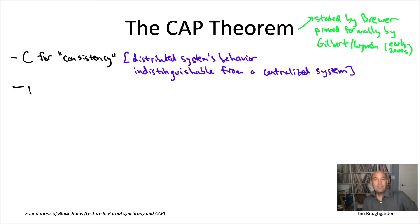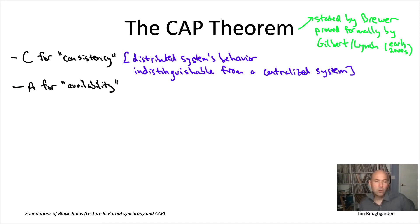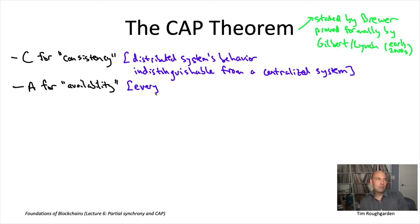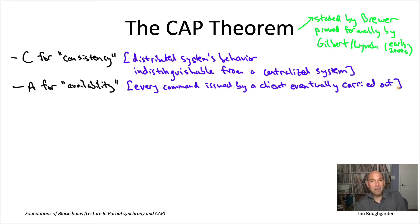Consistency plays a similar role that consistency has played for us in our discussions of state machine replication. For example, if you issue a database query, the answer you get should not depend on which of the replicas your query gets sent to. All of the replicas should agree on what the answer to some database query is.